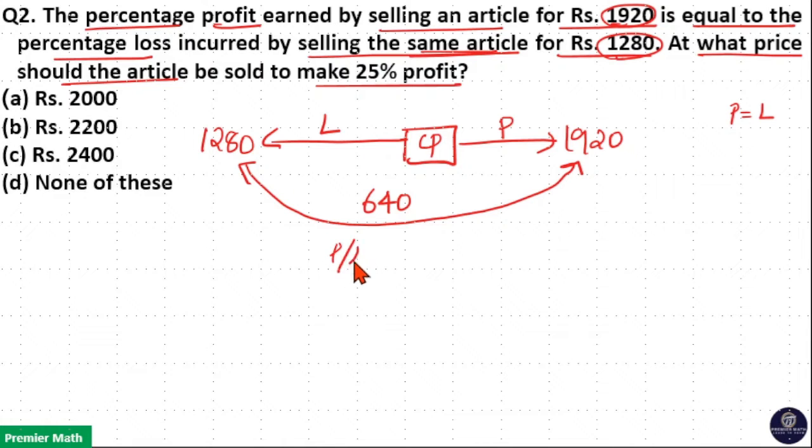Then profit is same as loss, means profit or loss is equal to 640 divided by 2, which is equal to 320.